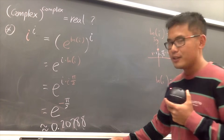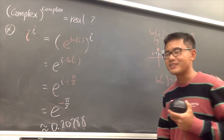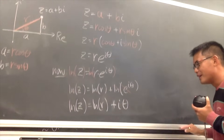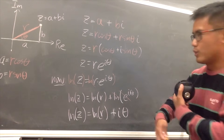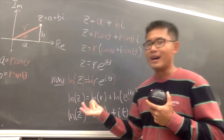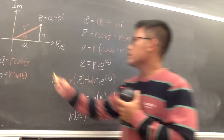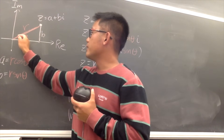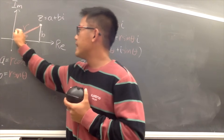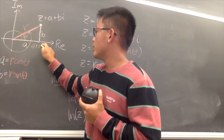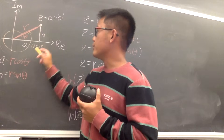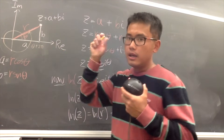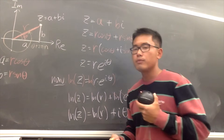If I ended the video there, it would cause a lot of arguments in the comments, because i to the i in fact has a lot of answers. I want to show all the possibilities. On the complex plane, we know we can just keep rotating. The angle theta can also be written as theta plus 2pi, or theta plus 4pi, theta plus 6pi, and so on. In general, this is theta plus 2pi n, where n is an integer.